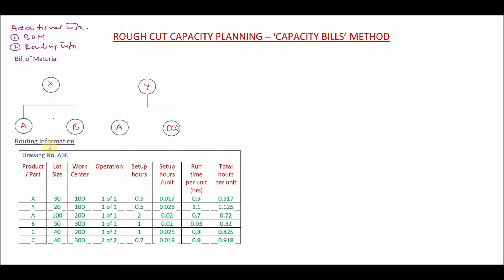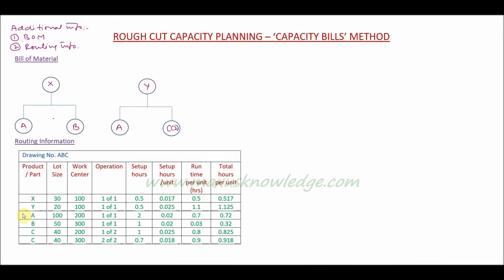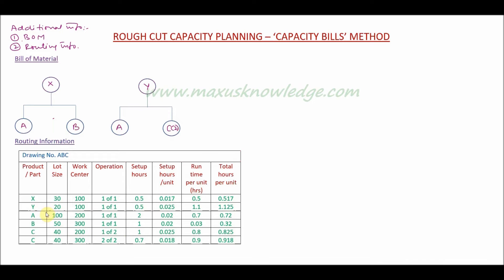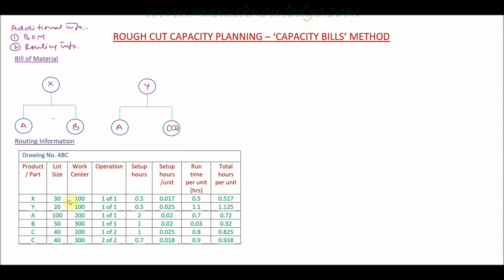This is the routing information, which basically shows how the components are being routed through different work centers, what operation takes place, and how much time each operation takes. Part X is made up of A and B, while Y is made up of A and C, so you see all these parts in the first column of the table. The lot size is given for each part, which is the most optimal quantity for processing in each batch. The work center is the machine on which the operation will take place.